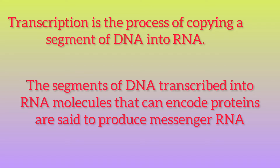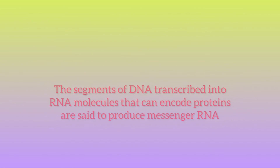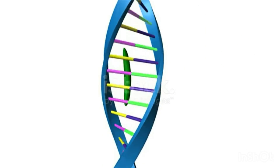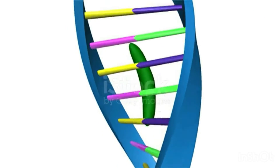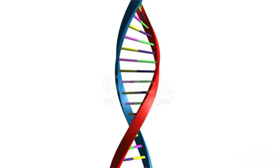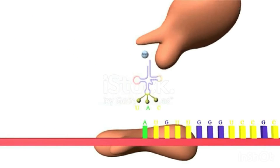In eukaryotes, transcription is performed in the nucleus by three types of RNA polymerases, each of which needs a special DNA sequence called the promoter and a set of DNA binding proteins called transcription factors to initiate the process.